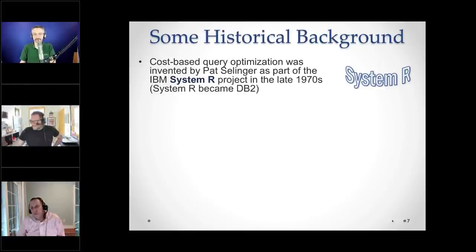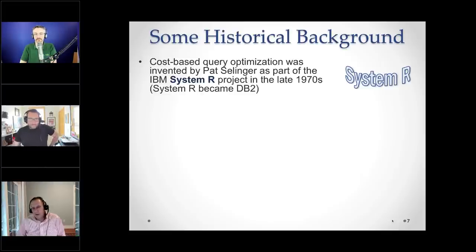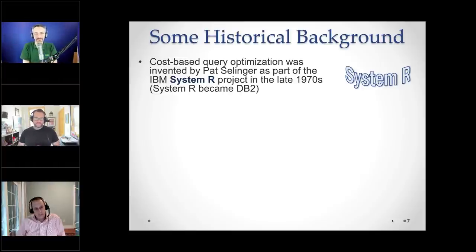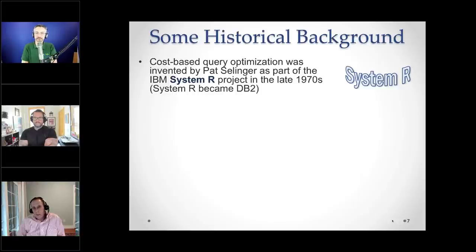My first technical paper in the database field was presented in the same technical session of the annual SIGMOD conference as Pat Selinger's. Nobody has ever referenced my paper. Her paper basically introduced the whole idea of cost-based query optimization as part of the IBM System R project. At the very beginning there was System R, a project at IBM that later became DB2, and Mike Stonebraker's Ingress project at Berkeley. These two were the very first relational database systems built. Oracle came a little later, as did SQL Server.